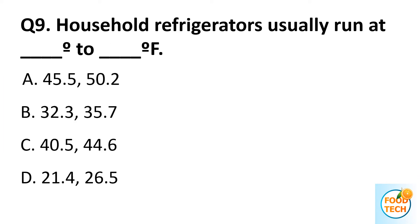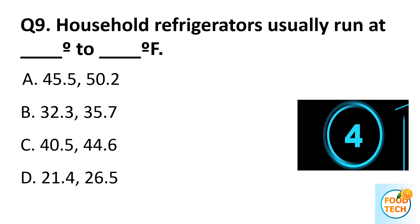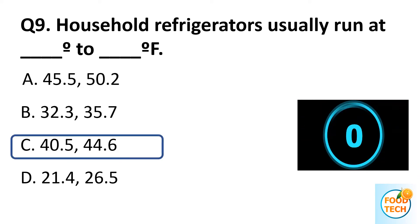Question 9. Household refrigerators usually run at dash to dash Fahrenheit. A. 45.5 to 50.2. B. 32.3 to 35.7. C. 40.5 to 44.6. Answer C. 40.5 to 44.6.